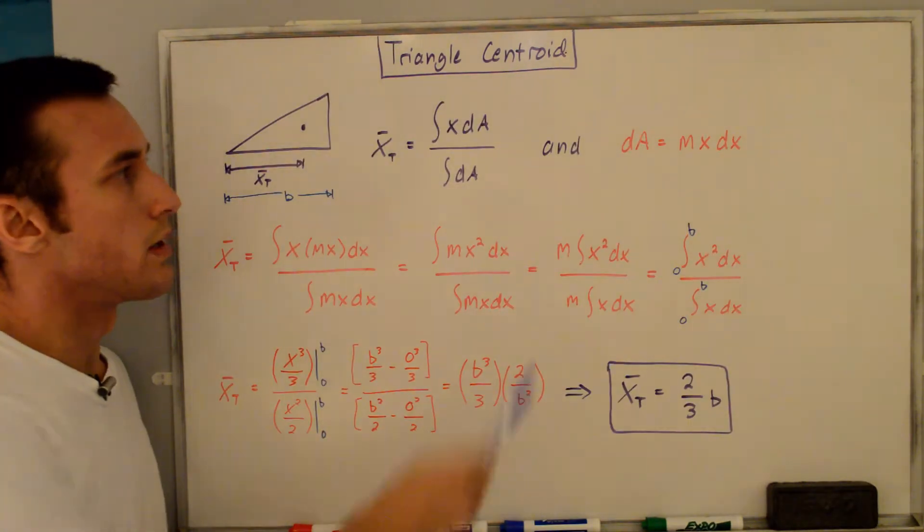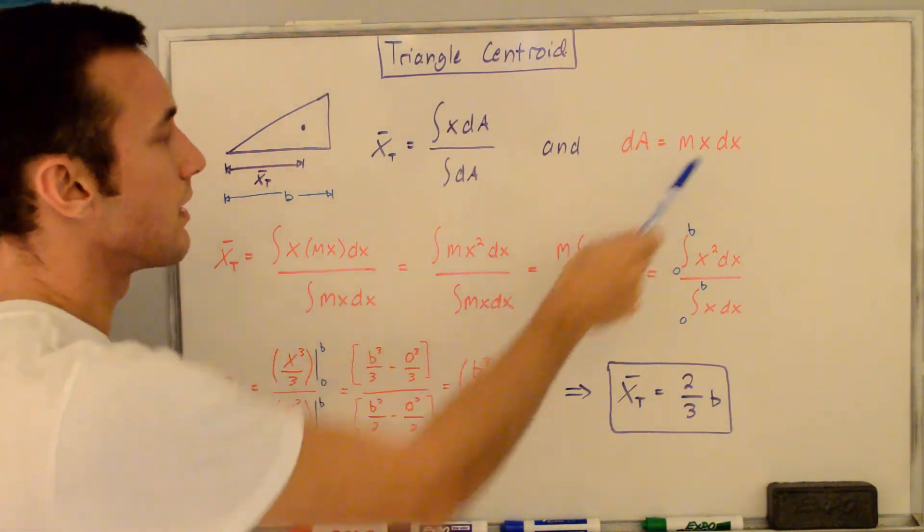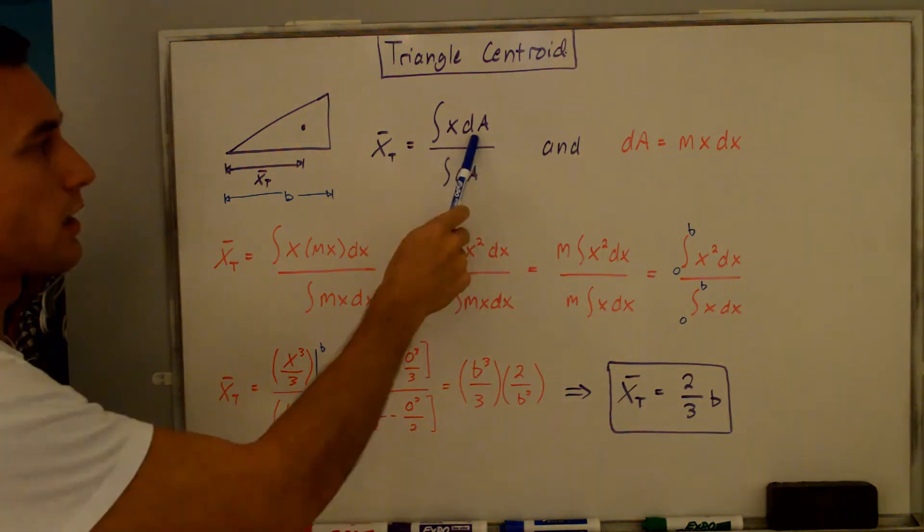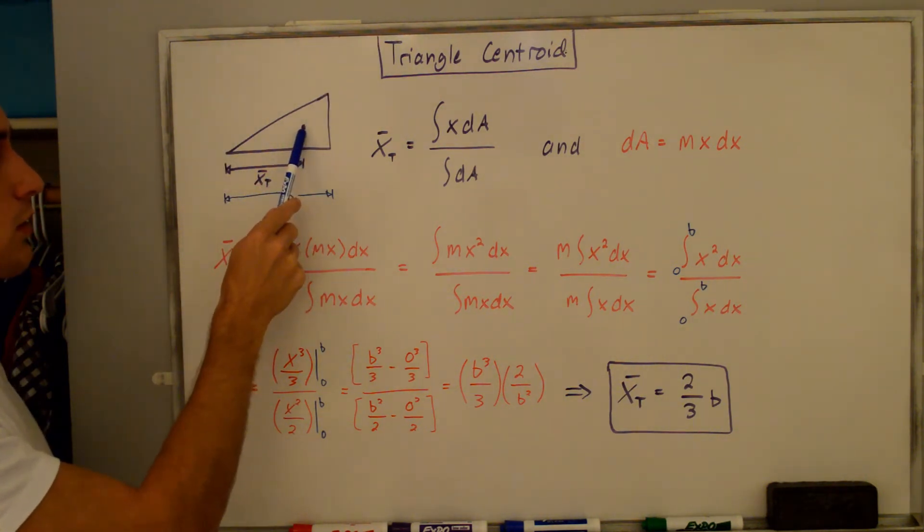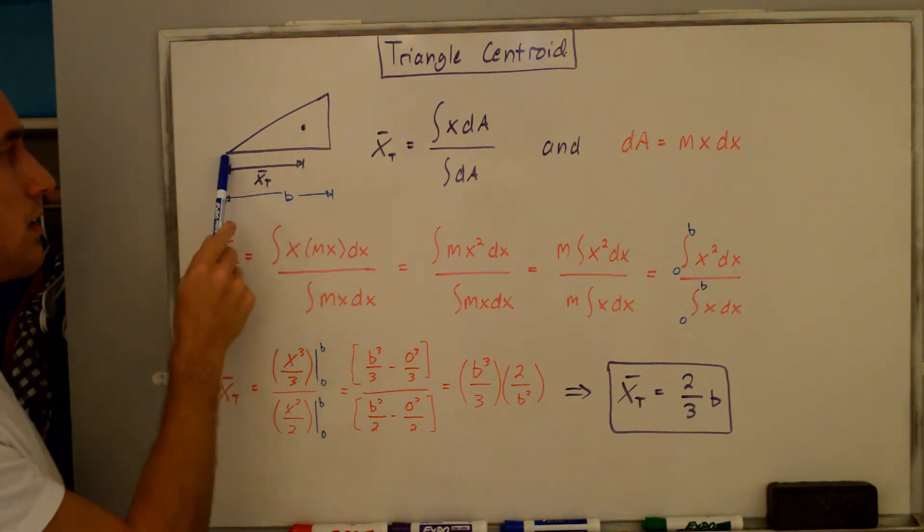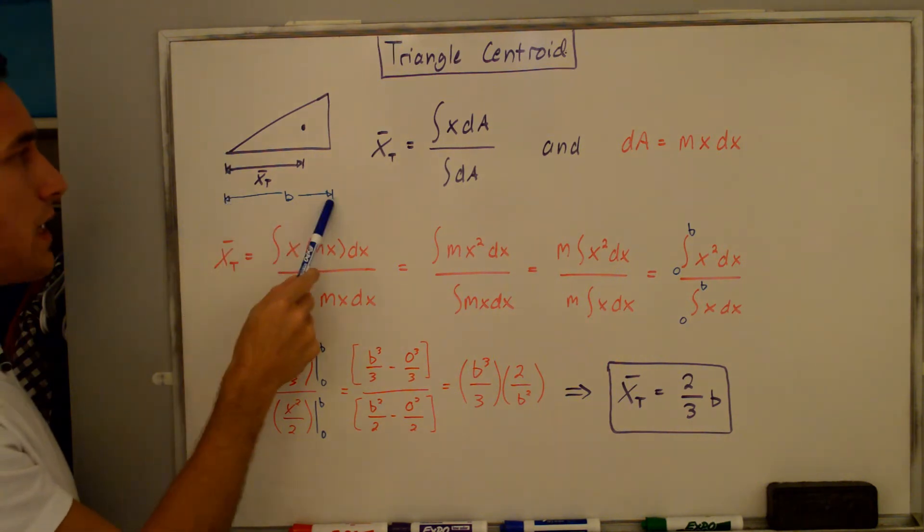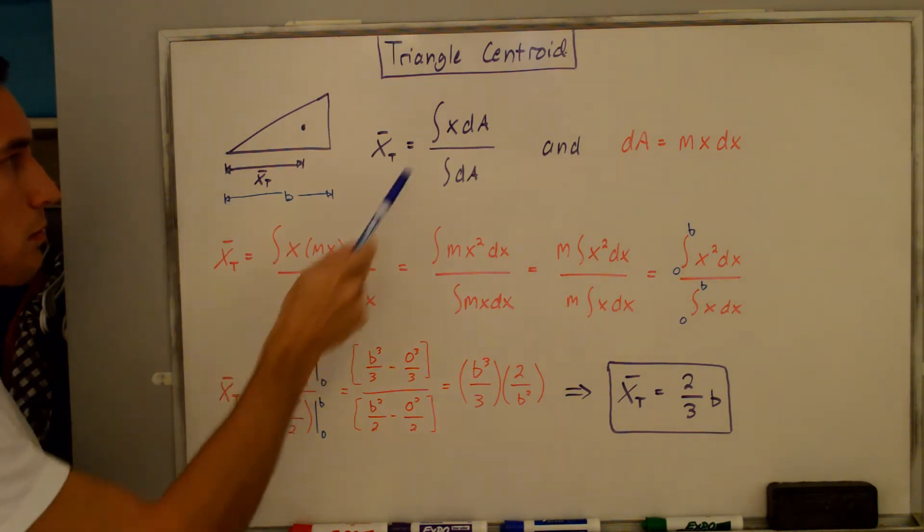Now that we know the differential area element equals mx times dx, we can plug this into the expression for the centroid position. I've redrawn this triangle here with the centroid position located at some distance x_t from this vertex, and the entire base length is b.